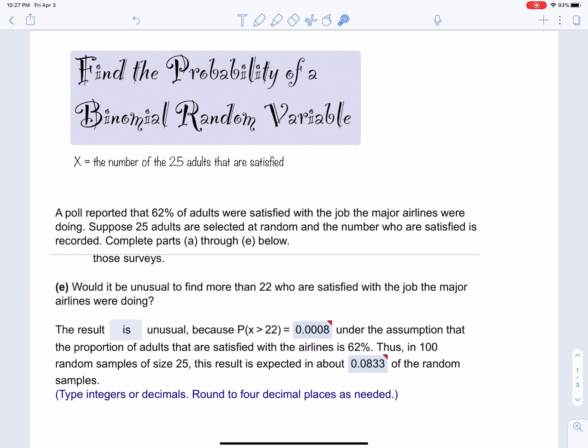Okay, so let's do part E. It says, would it be unusual to find more than 22 who are satisfied with the job the major airlines are doing? Alright, so what's going on here? Unusual, we know that we need to check if the probability is less than 0.05. But what we have here is more than 22, so we've got to think about that.